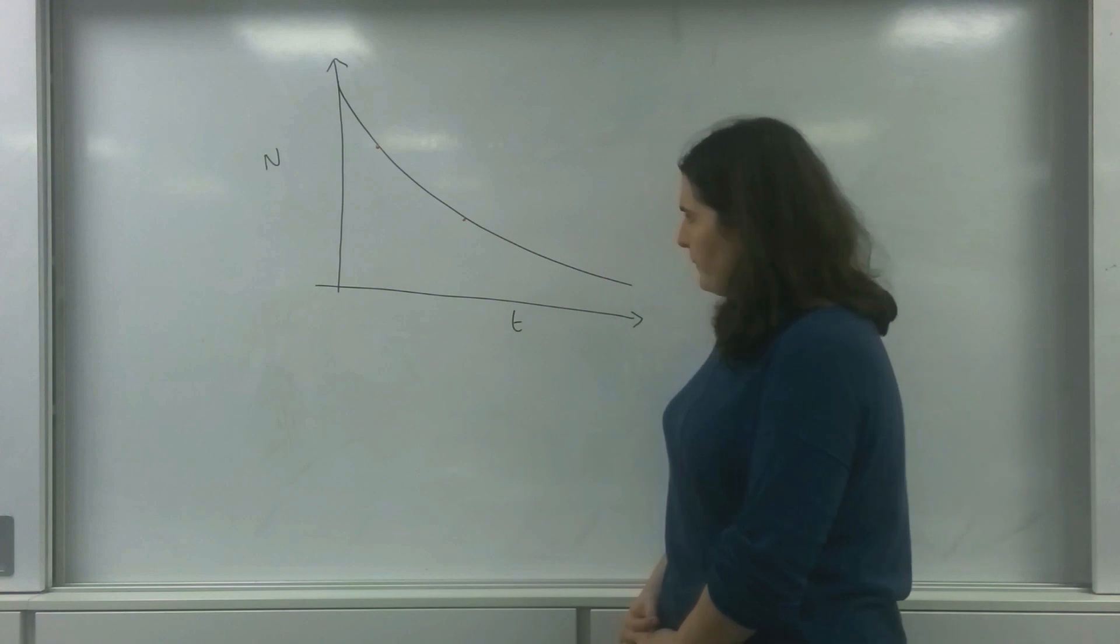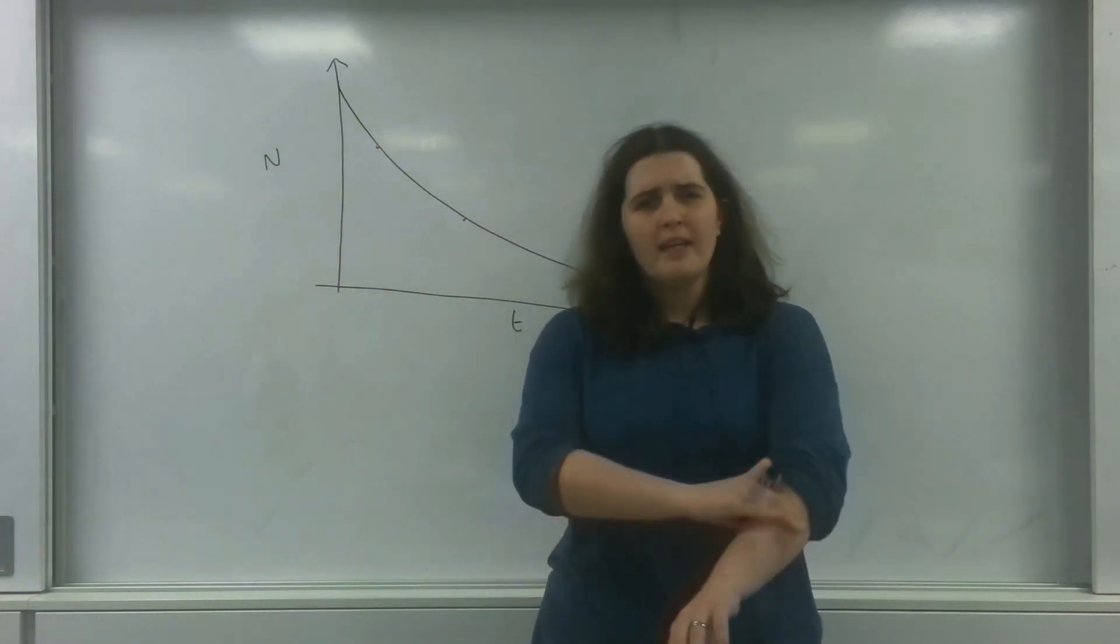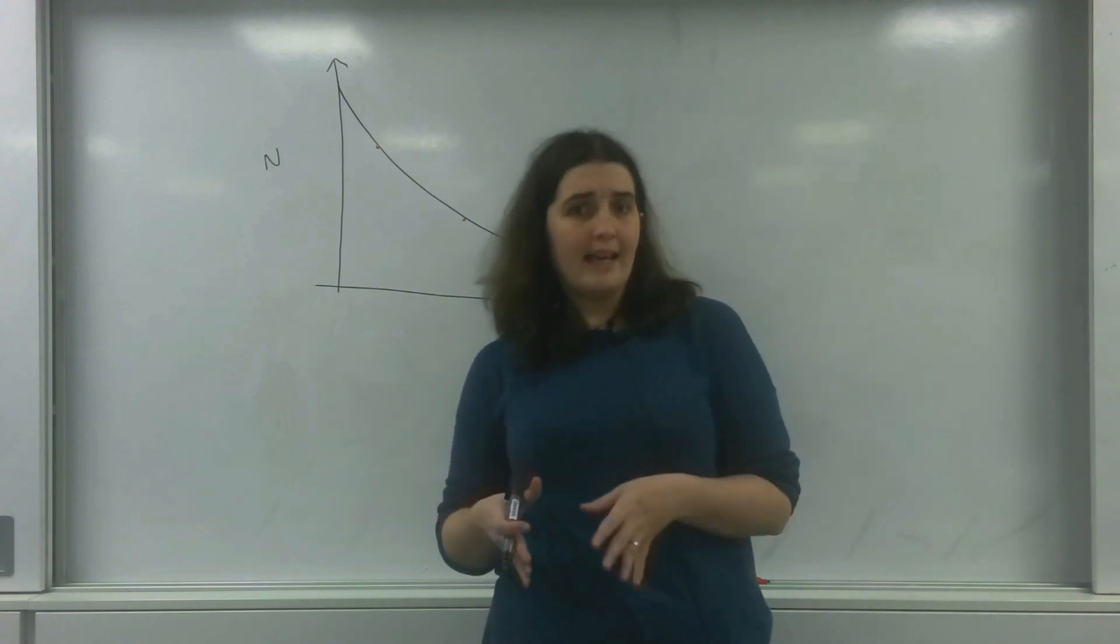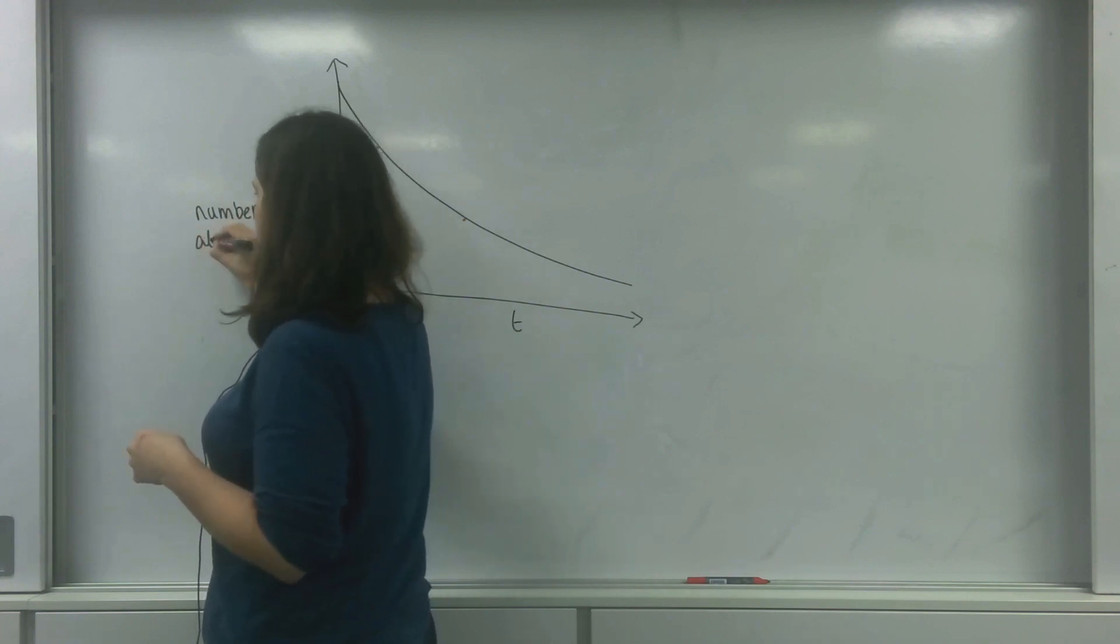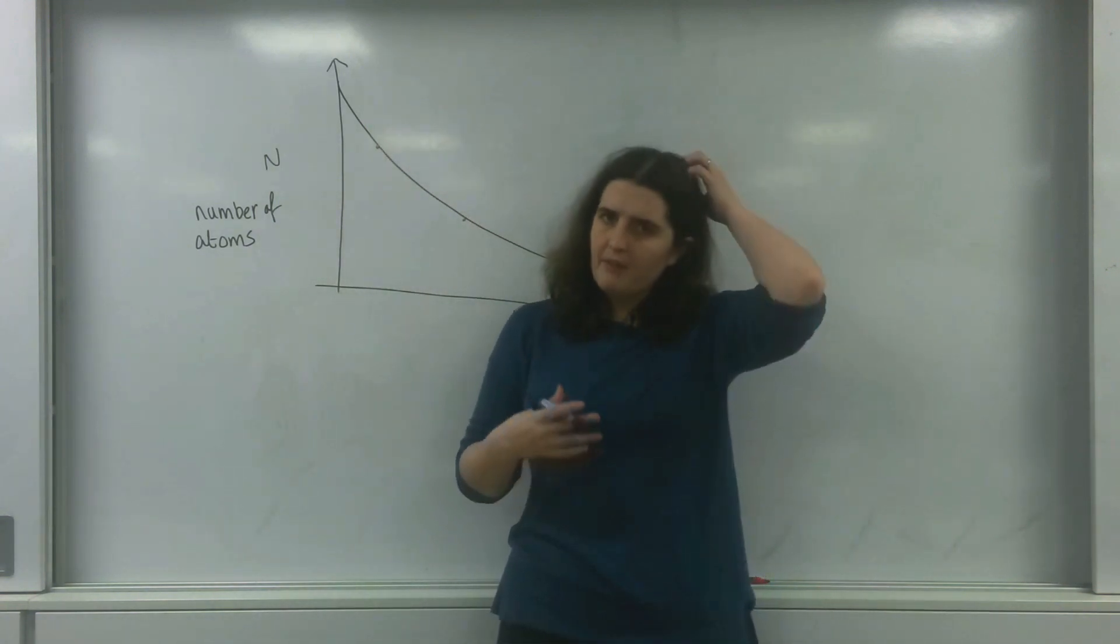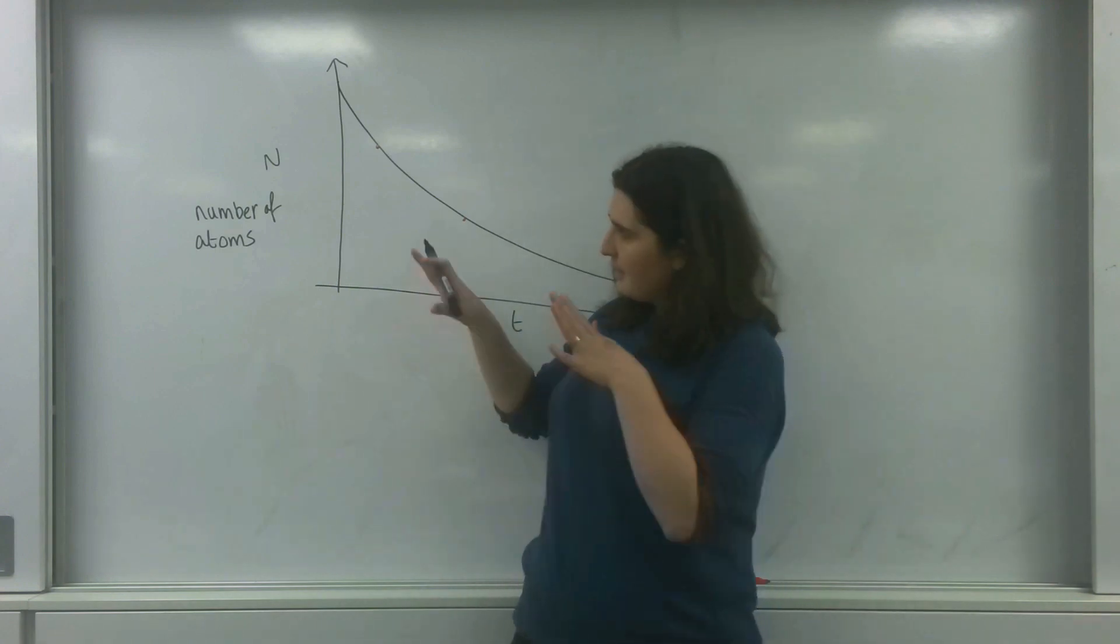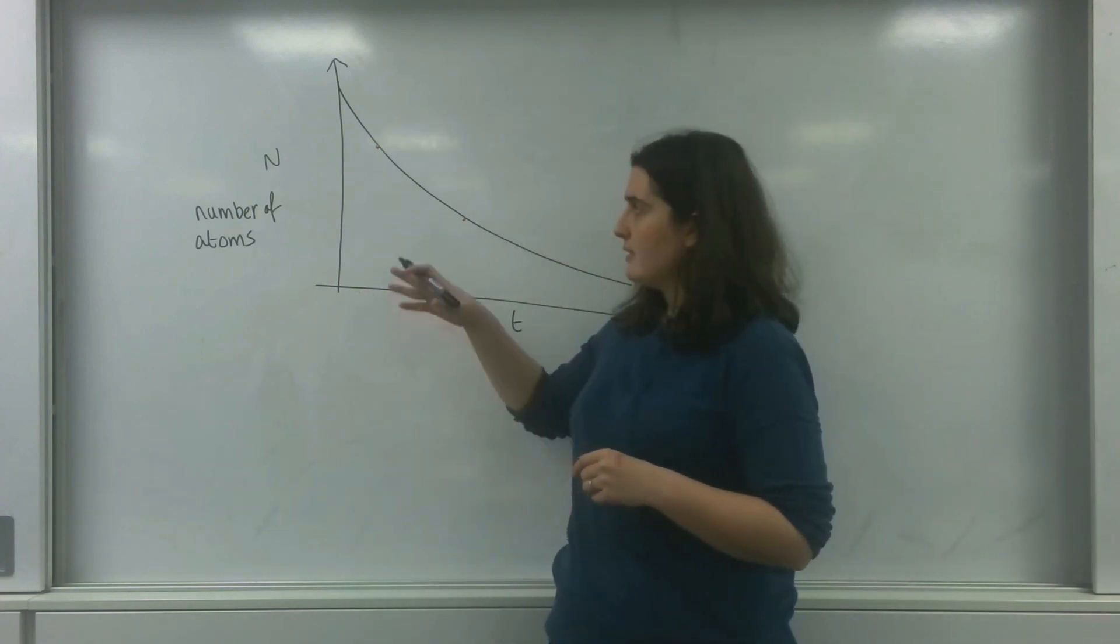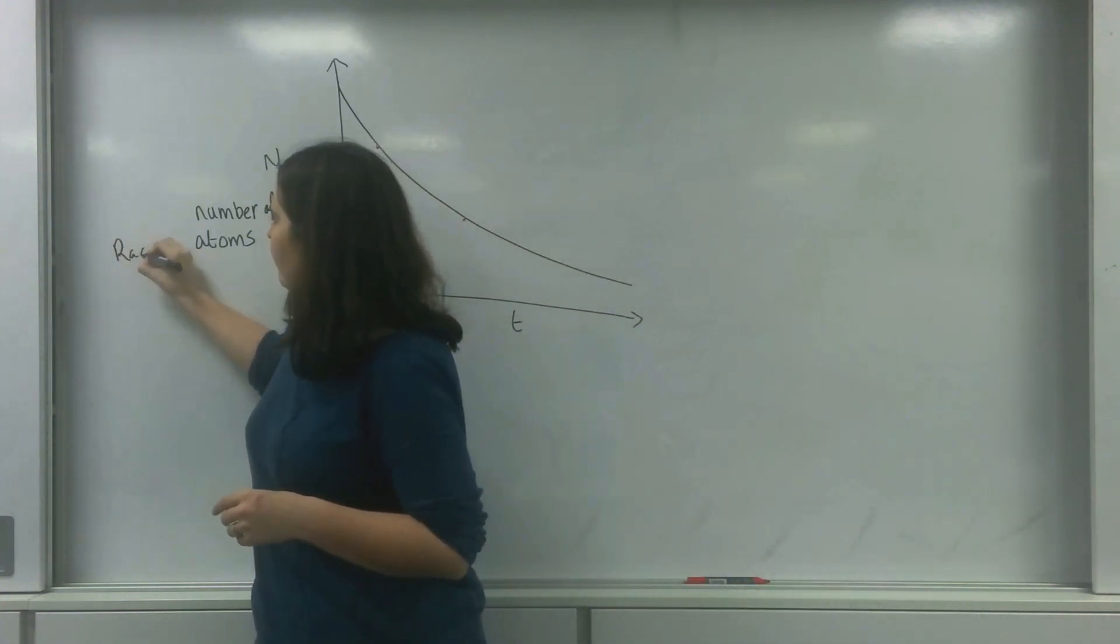So what I have here is a graph of n, and you should see this n before in PV equals nkT. This n means the number of atoms or molecules, and in this case for radioactivity, this is the number of atoms, and importantly these are the radioactive ones.